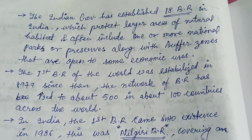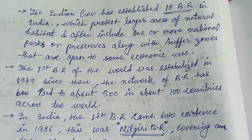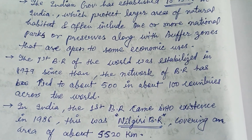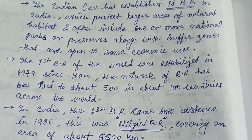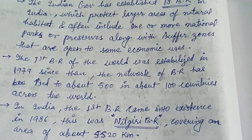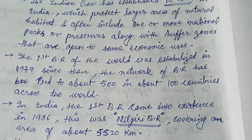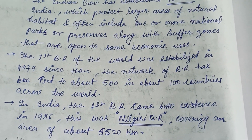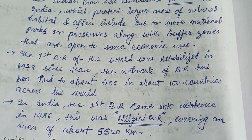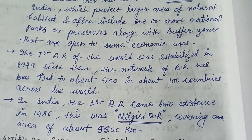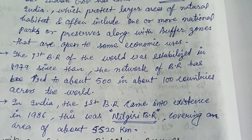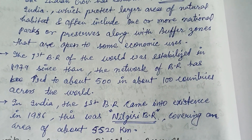The first Biosphere Reserve was established in 1979, and the network has since grown to about 500 reserves across the world. In India, the first Biosphere Reserve came into existence in 1986 — the Nilgiri Biosphere Reserve — covering an area of about 5,520 square kilometers.